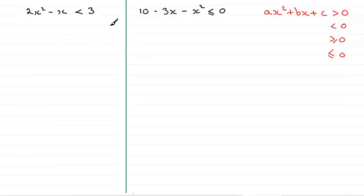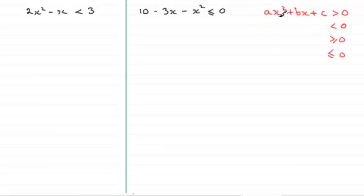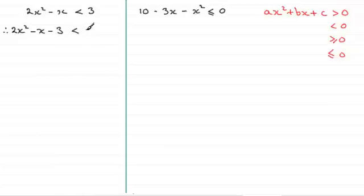Now I've got two examples here which I'm going to run through. Both of these reflect different points which we'll go through. For the first one, we've got to solve 2x squared minus x is less than 3. You can see it's not in the form ax squared plus bx plus c, so I've got to remove the 3 from the right hand side. So I'm going to have 2x squared minus x minus 3 is less than zero.